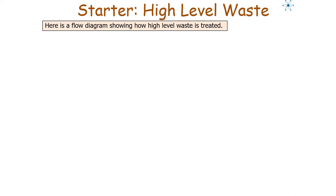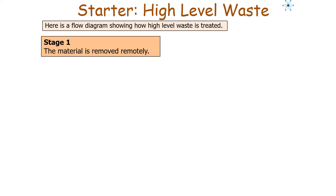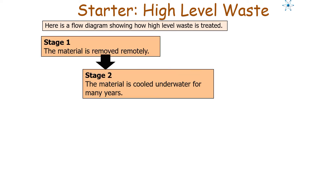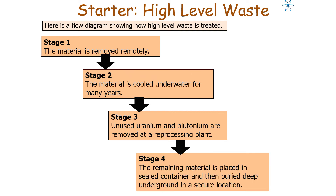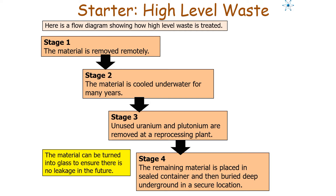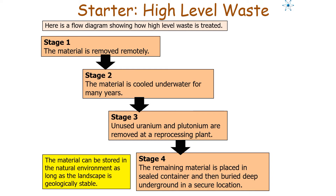Here is a flow diagram showing how high-level waste is treated in the UK. Stage 1: the material is removed remotely. Stage 2: the material is cooled underwater for many years. Stage 3: unused uranium and plutonium are removed at a reprocessing plant. Stage 4: the remaining material is placed in a sealed container and buried deep underground in a secure location. The material can be turned into glass to prevent leakage, and stored as long as the landscape is geologically stable.